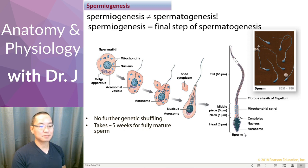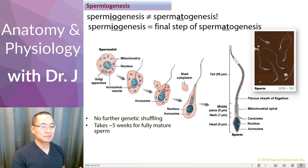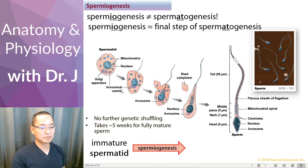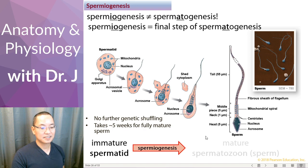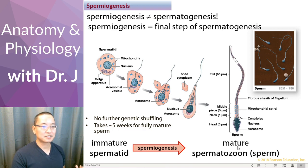This is why it's important to have these sustentacular cells, also known as nurse cells or Sertoli cells, because these sperm take a long time to get ready. Here we have an immature spermatid, and then it undergoes spermiogenesis — this entire process — and then becomes a mature sperm, or spermatozoan.